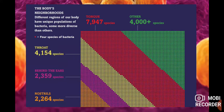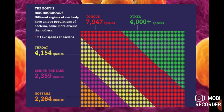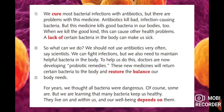Now let's look at this graph: 'The Body's Neighborhoods.' Different regions of our body have unique populations of bacteria. The nostrils have 2,264 species; behind the ears, 2,359; the throat, 4,154; the tongue, 7,947 — the largest quantity. The tongue has the most bacteria, followed by the throat, behind the ears, and the nostrils.